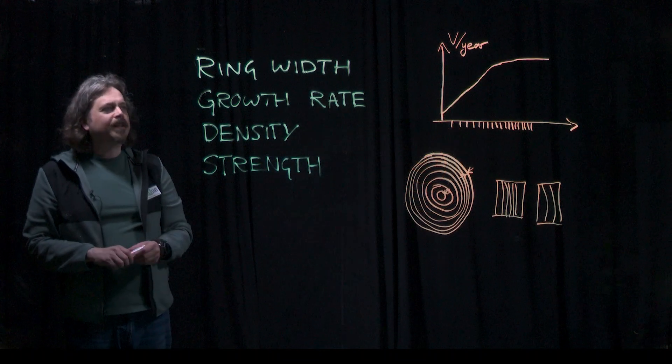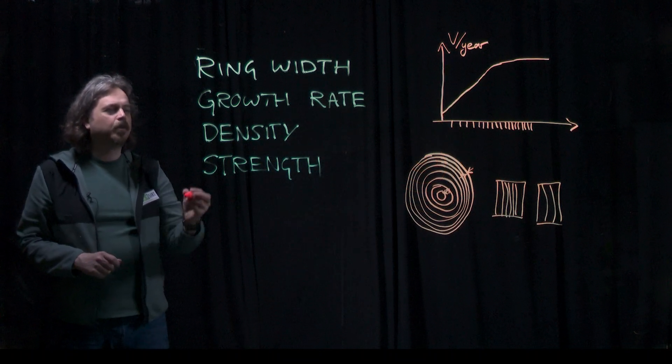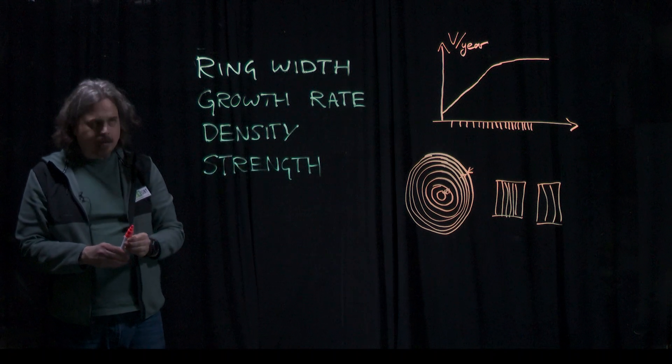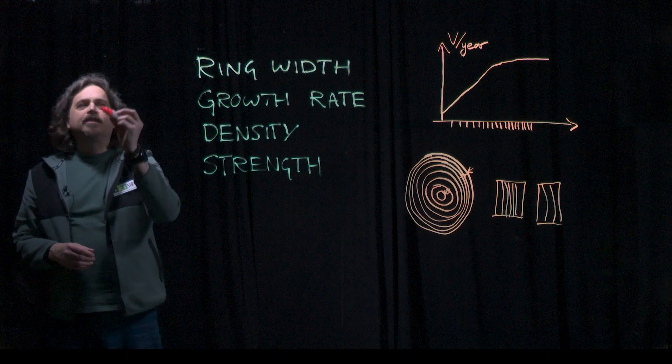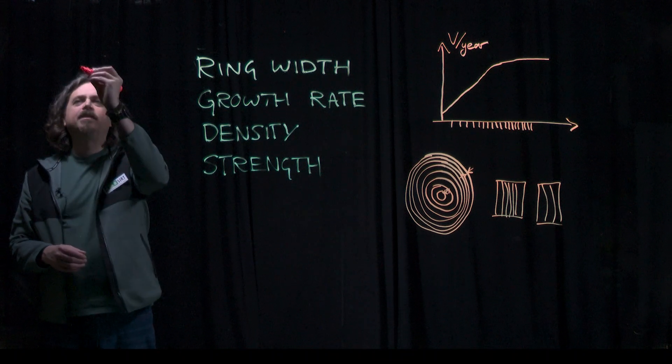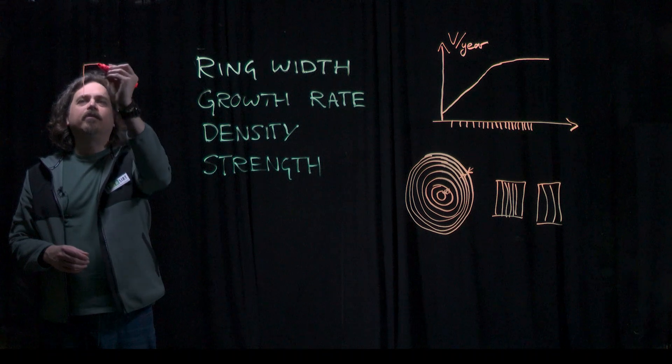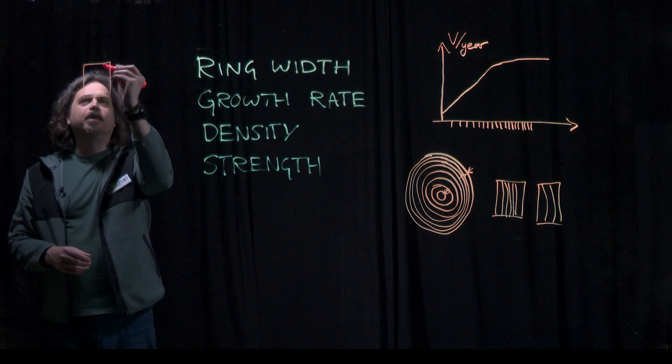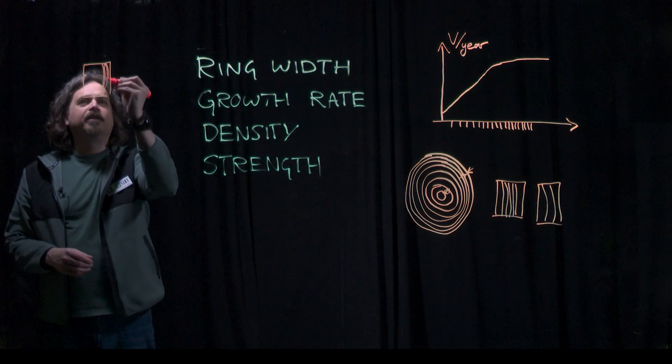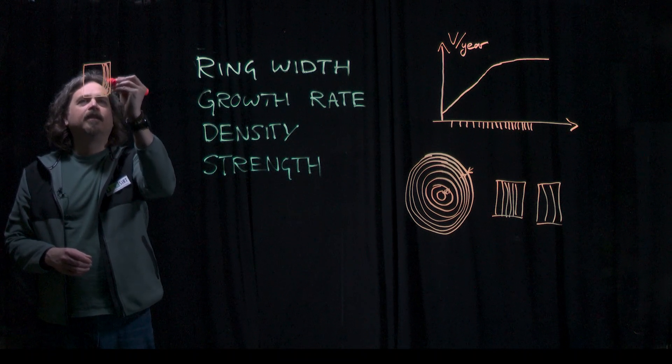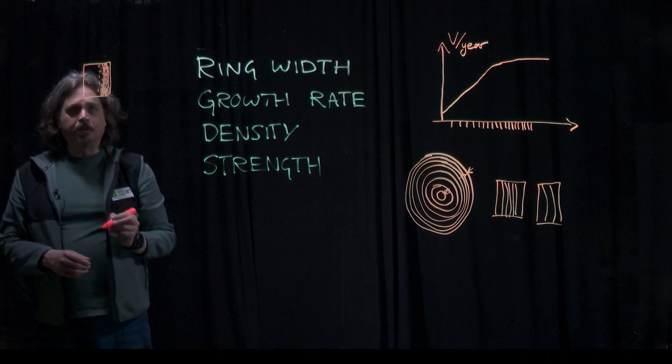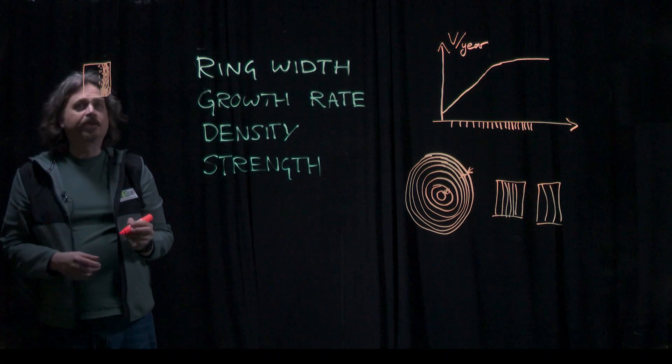Now why do people say that a wide growth ring means lower density wood? Well that's partly because it's sort of true in some species. So in a species where your growth ring has the two parts, the early wood and the late wood, and there is kind of a gradual transition from the early wood into the late wood, like spruces and firs.